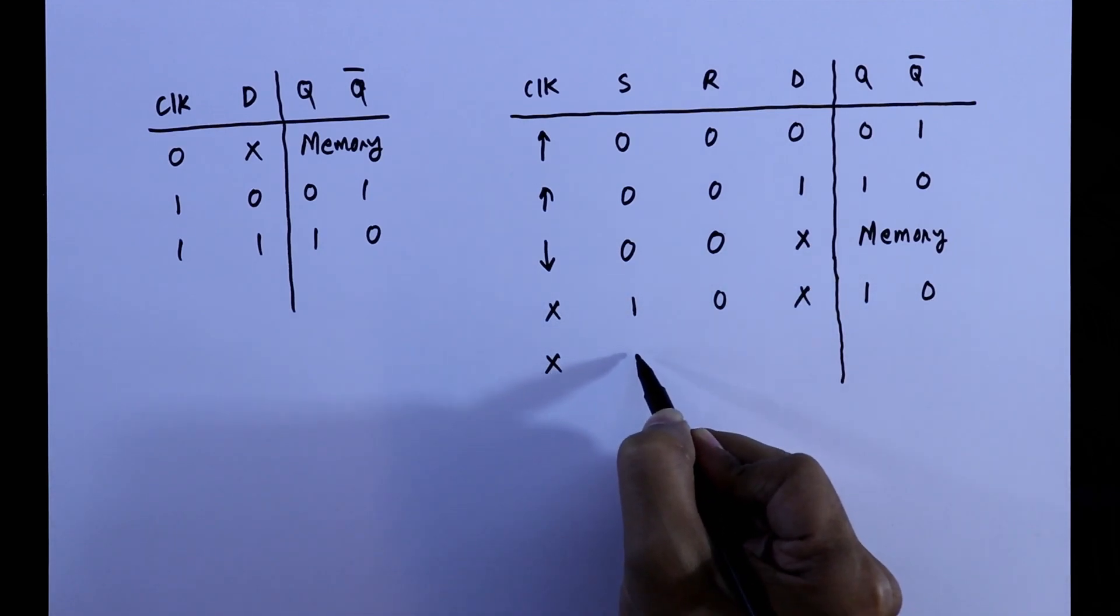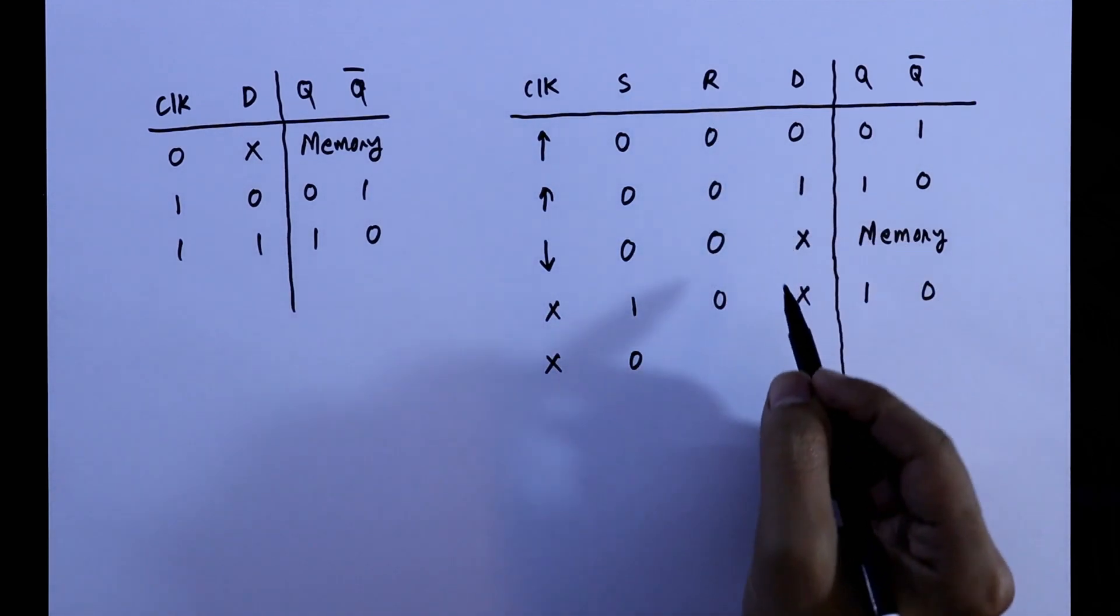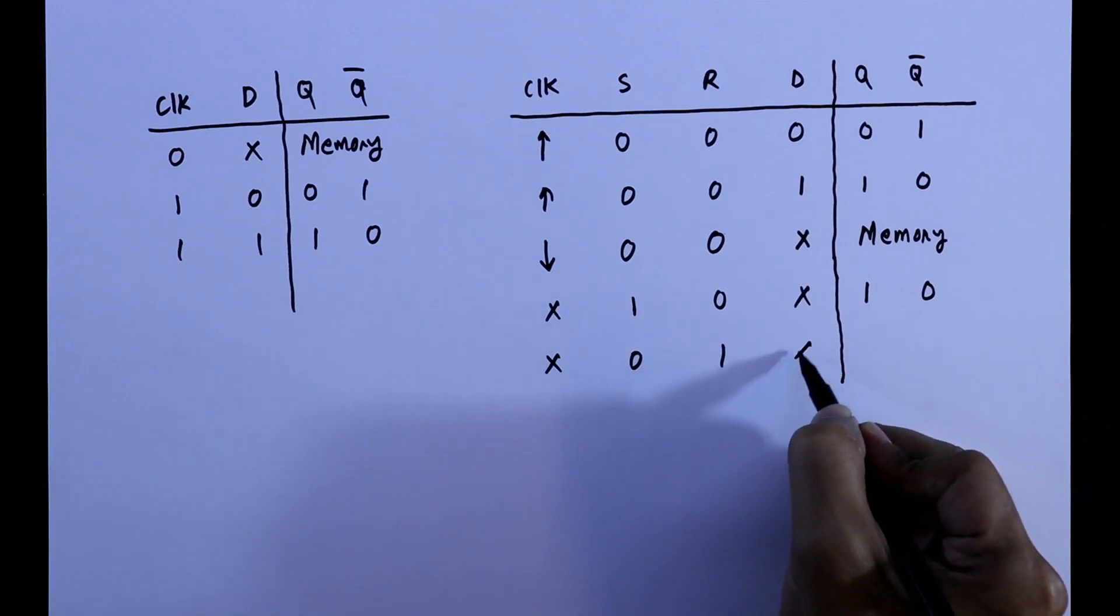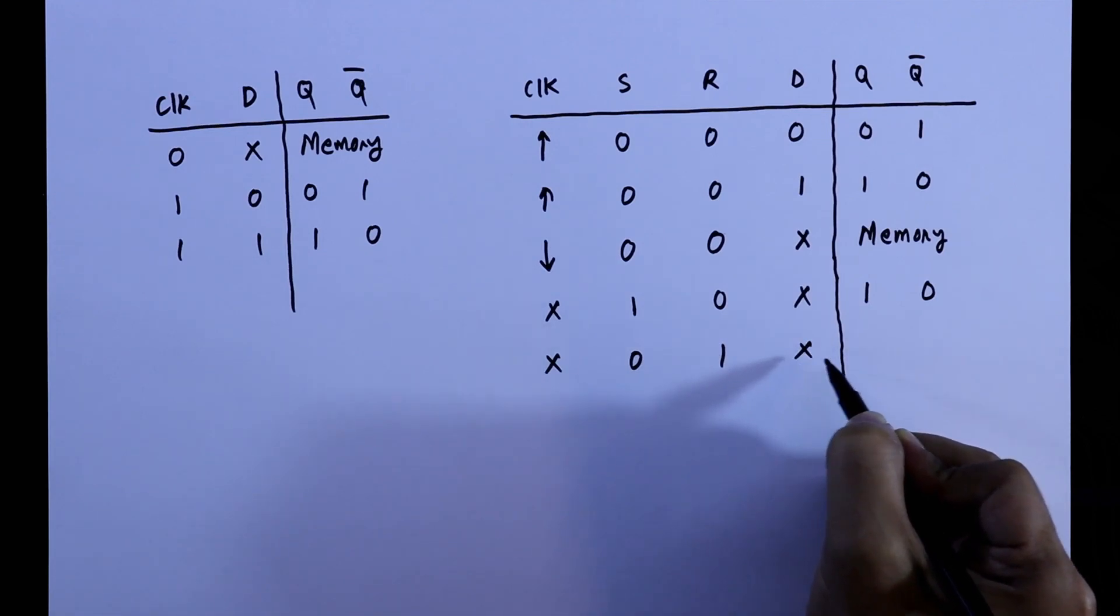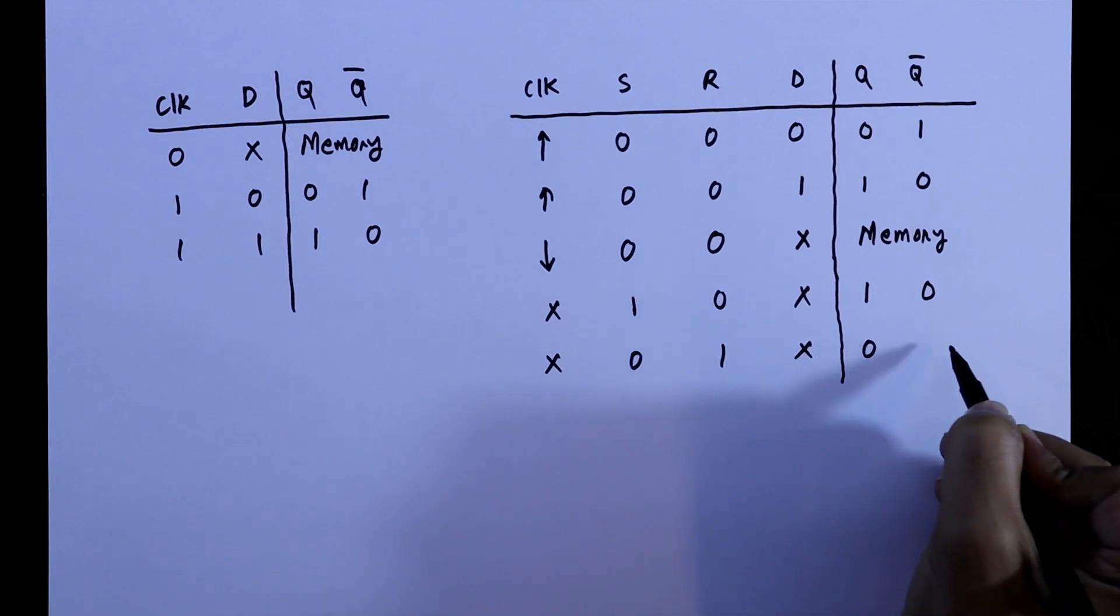Again set is 0 and reset is 1. Again, it doesn't matter whether D is 1 or 0, Q bar will be 1.